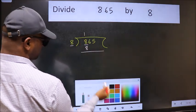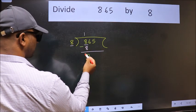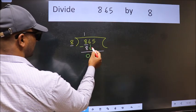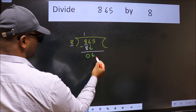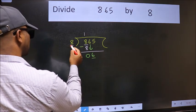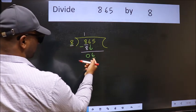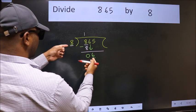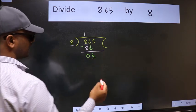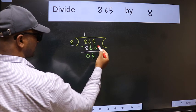Now we should subtract. We get 0. After this, bring down the next number, so 6 comes down. Now here we have 6 and here 8. 6 is smaller than 8, so we should bring down the second number.